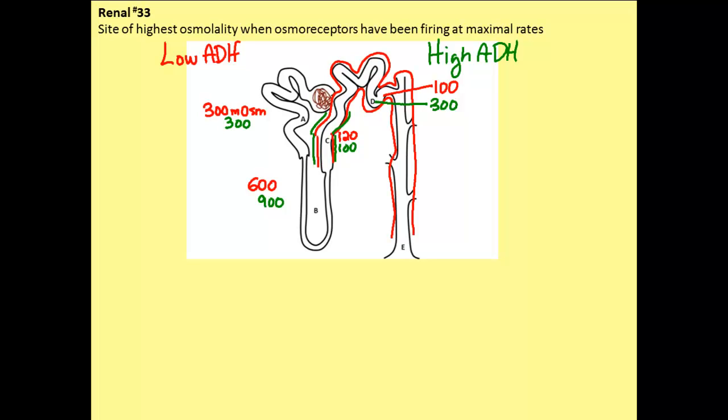Then, when we continue down to E, which is at the end of the collecting ducts, we can consider this our final urine that is produced. When ADH is low, we would expect to see a value of about 75. This is hypoosmotic, so we have a very dilute urine whenever ADH is low. Remember that the osmolality is still dropping from 100 to 75 because we are still having some solute reabsorption and the water can't follow.